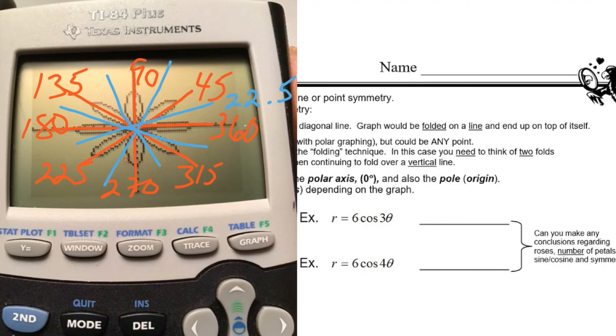I missed one, didn't I? There's a point symmetry here. This rose happens to be able to be folded vertically, or folded over a horizontal line and over a vertical line. I can say that the point zero radius, zero degrees, known as the pole, would also be a point symmetry for this graph. Go ahead and look at the exercises at the bottom. See if you can identify any point or line symmetries.